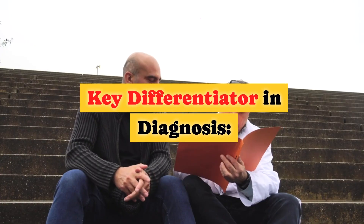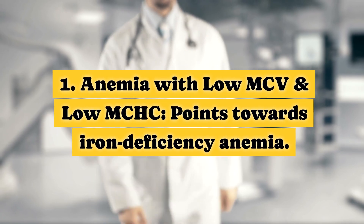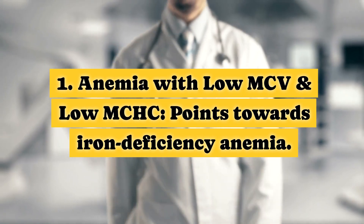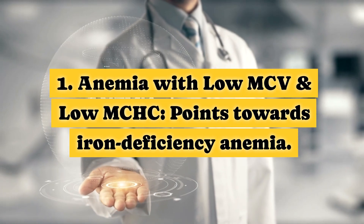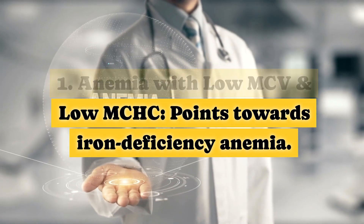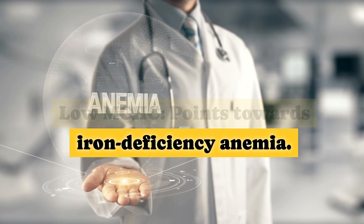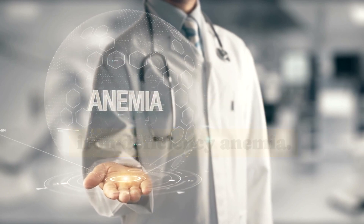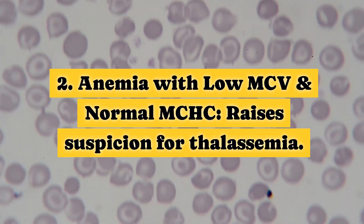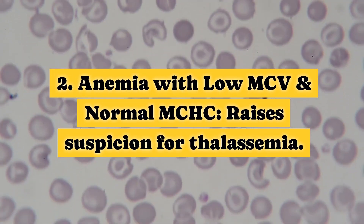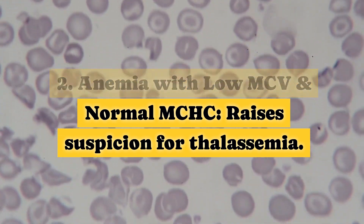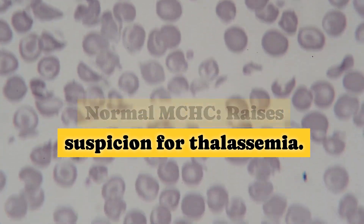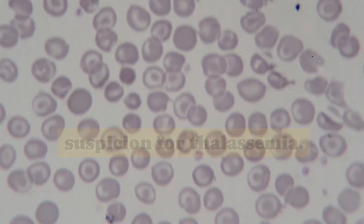Key differentiators in diagnosis: anemia with low MCV and low MCHC points towards iron deficiency anemia, while anemia with low MCV and normal MCHC raises suspicion for thalassemia.